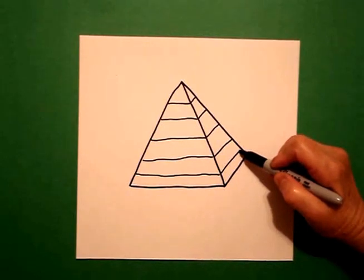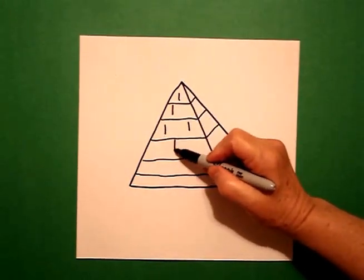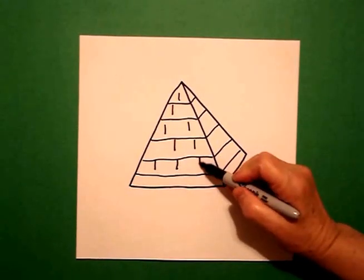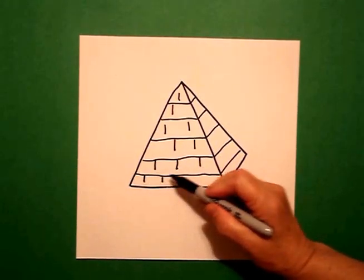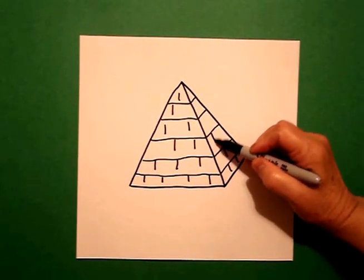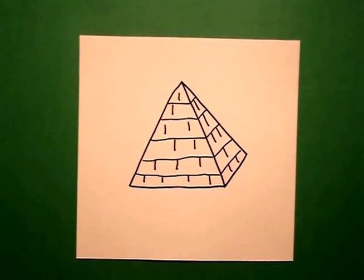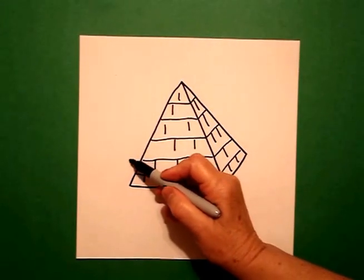Then I'm going to come back in and sporadically add some little straight lines representing the bricks. You don't have to do too many. You just want to kind of give the idea that this is pieced out.